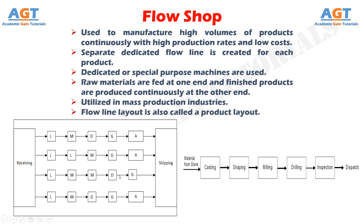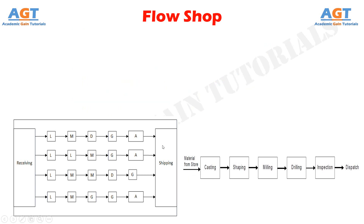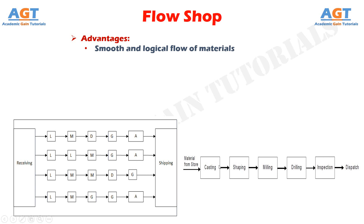Let's look into the advantages of flow shop manufacturing system. Smooth and logical flow of materials is achieved in flow line manufacturing because dedicated machines are used to manufacture the products at high production rates, and a separate dedicated flow line is created to manufacture each product.